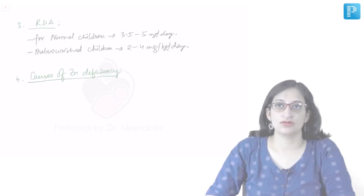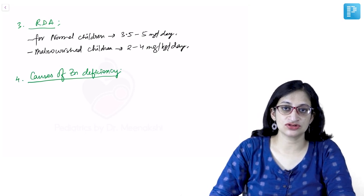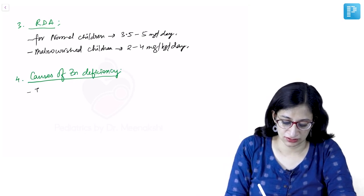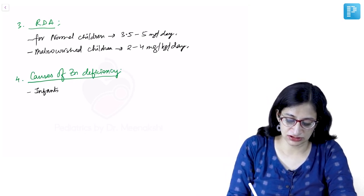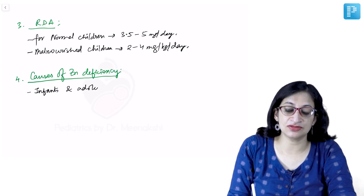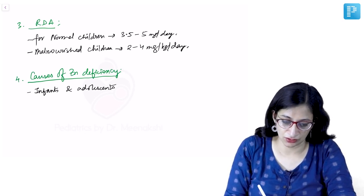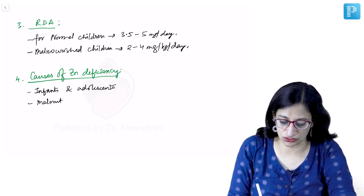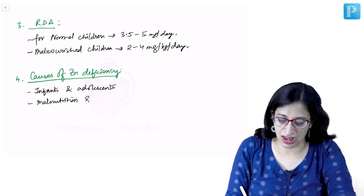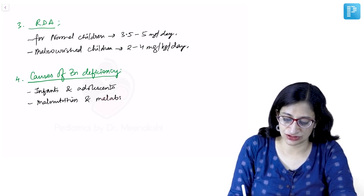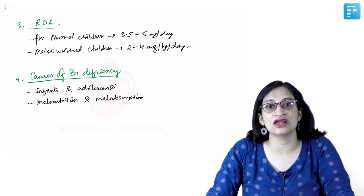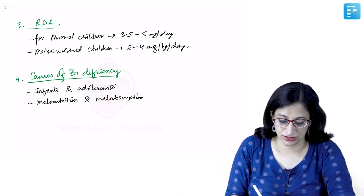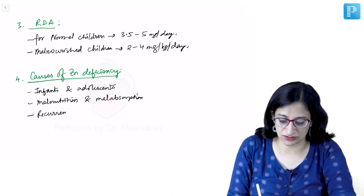Moving on to some important causes of zinc deficiency. Zinc deficiency can be seen in infants and adolescents where the requirements are more, mainly due to increased demand. In malnutrition and malabsorption, in children with malnutrition and malabsorption, we can get features of zinc deficiency. Recurrent or chronic diarrhea can give rise to zinc deficiency due to excessive loss in the stool.